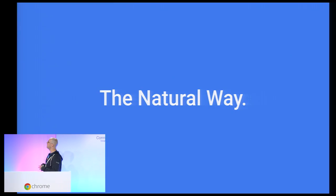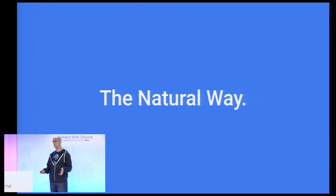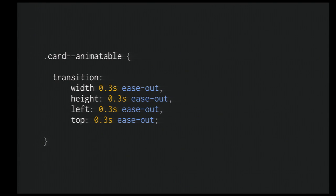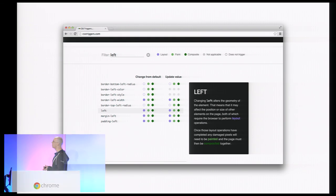I want to step through what we call the natural way — the way most of us would think to solve this problem. We have a box that's moving on screen, getting bigger. So we think: let's do this with CSS, because we've heard that's good for performance. So we'll transition on width, on height, on left, and on top. That seems like it will do the job. Unfortunately, it gives us two problems.